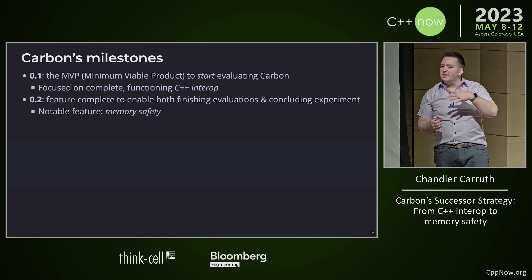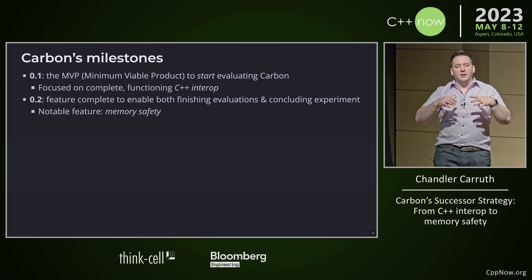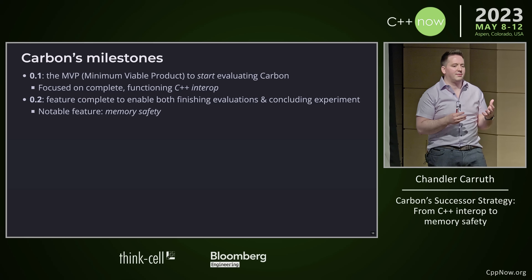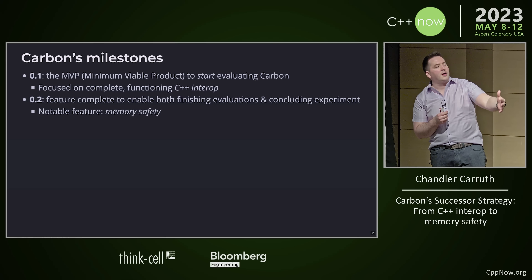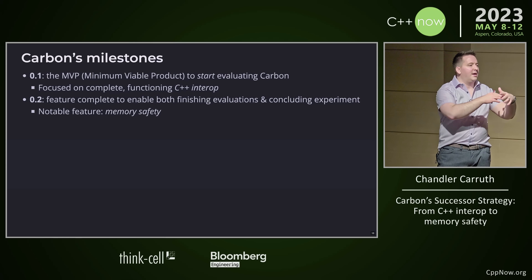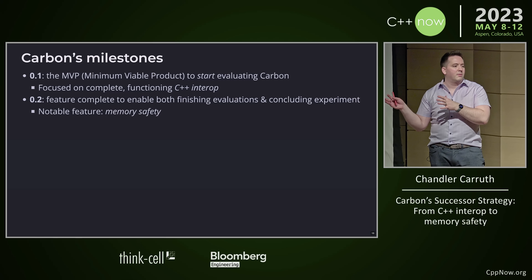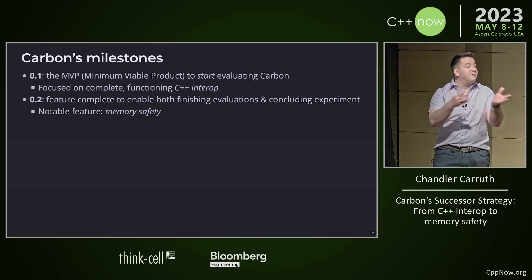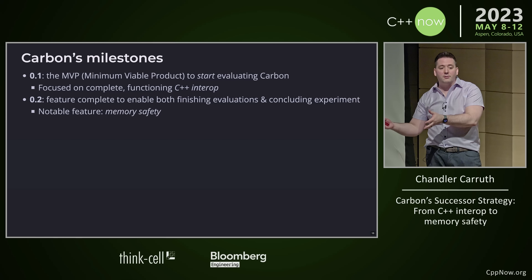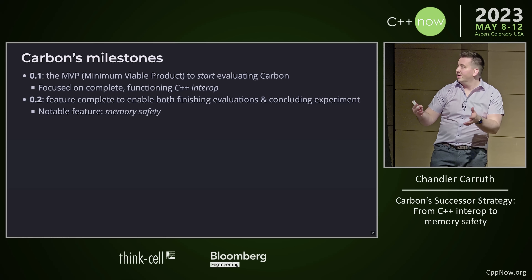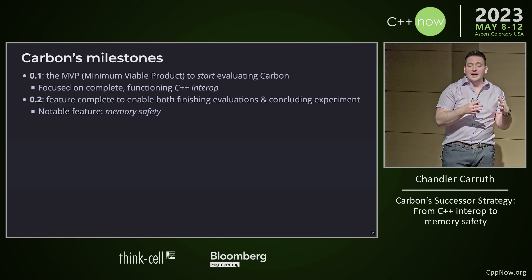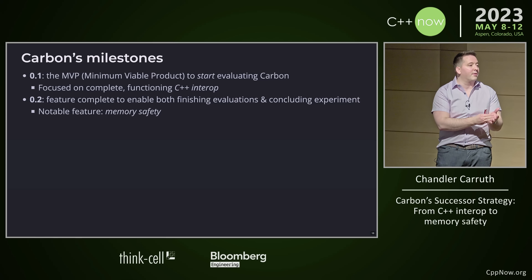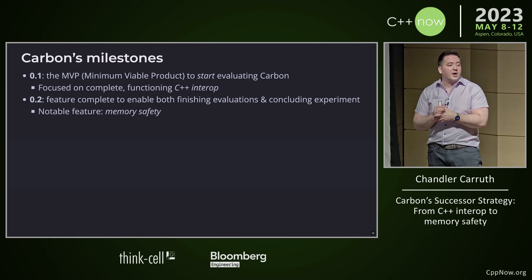Beyond that, we don't think that initial release is going to be a feature-complete offering for a successor language. It's not going to have everything we really need. We're also planning a 0.2, which will get us to some kind of feature-completeness. It's not going to be production-ready — it's going to be feature-complete so that people who started evaluating can actually finish that evaluation looking at all of the features we have to offer. Memory safety is not an afterthought for us; it's a very important and high-priority thing, but it is not in the schedule for 0.1.